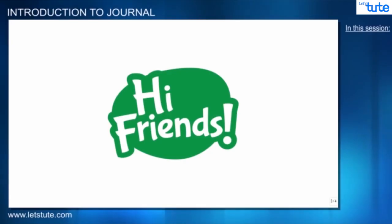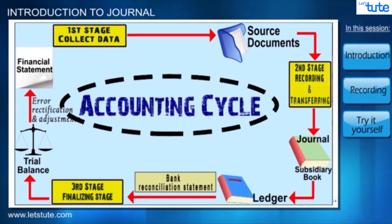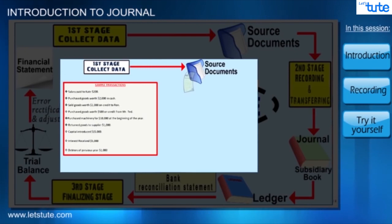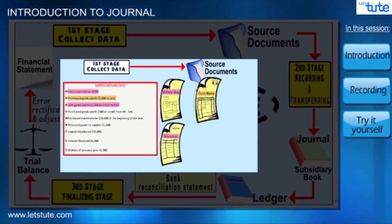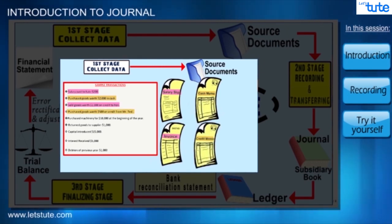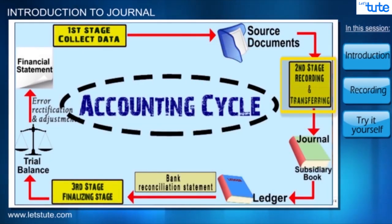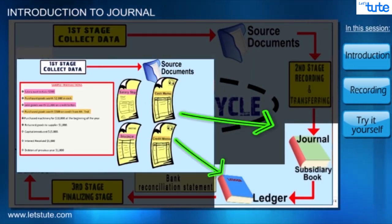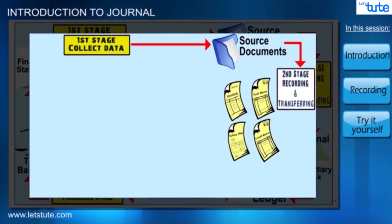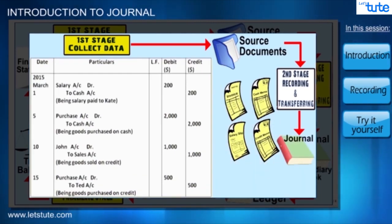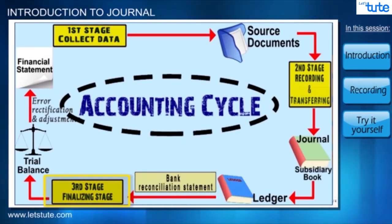Hi friends. We have seen that an accounting cycle consists of three stages. The first stage is collecting all the source documents, which we discussed in detail in our previous session. Now that we have finished collecting all the source documents, let's move to the next stage of recording and transferring them in different accounting books. In today's session we will focus only on recording transactions in our journal, and the later stages of the cycle will be dealt with in further sessions.